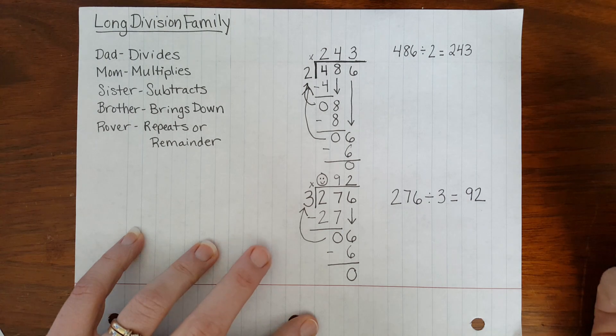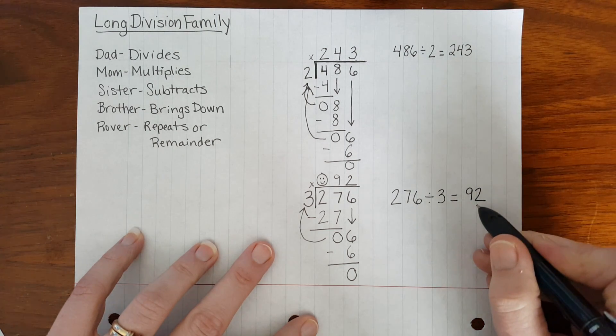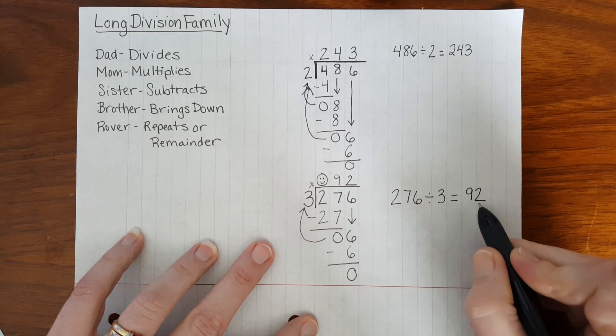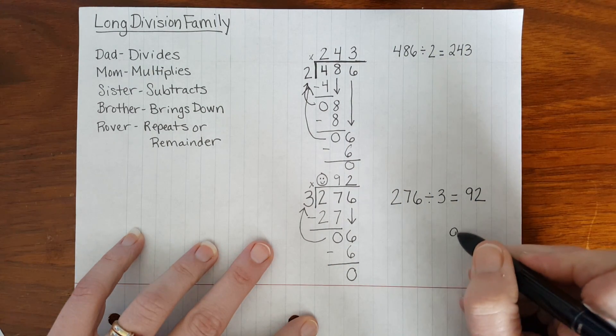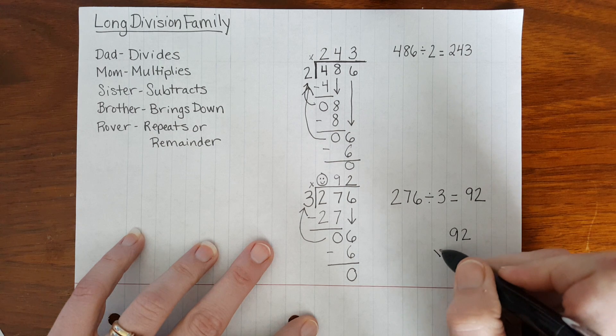We could quickly double-check this if we wanted to by taking our quotient times the divisor, and that should equal our dividend. 92 times 3.